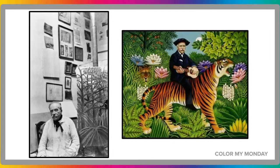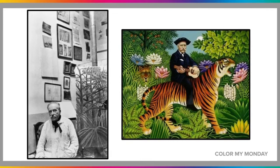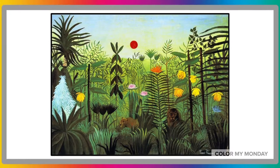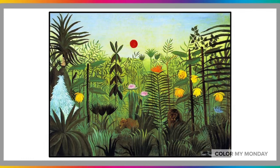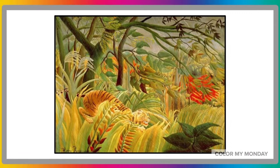He taught himself how to paint by copying paintings from art museums and sketching plants in botanical gardens. His art is in the realm of naive and primitive art. Naive art is art created by a person who doesn't have formal training, and primitive art is art that attempts to recreate a primitive experience.